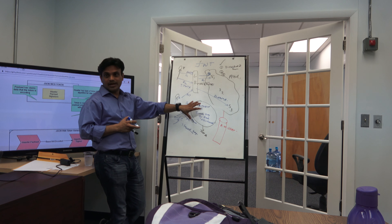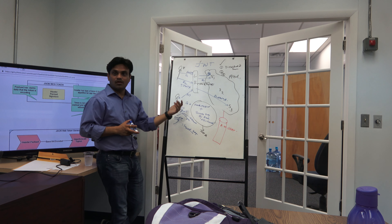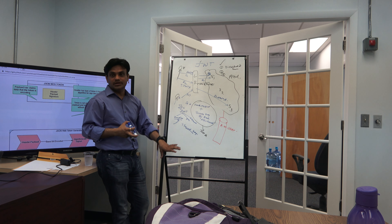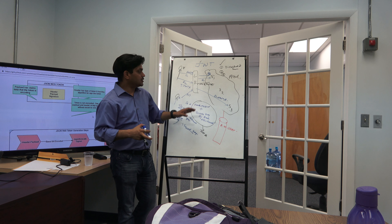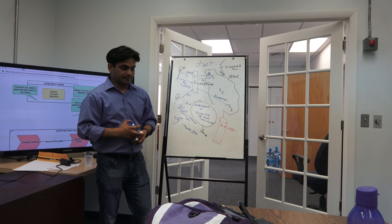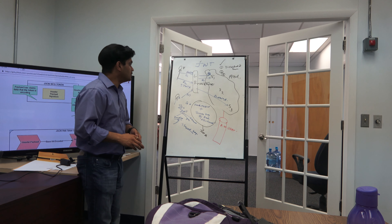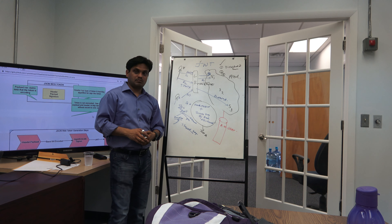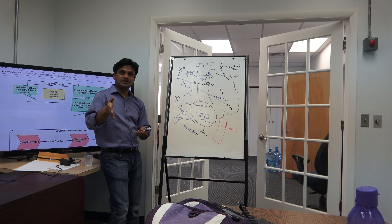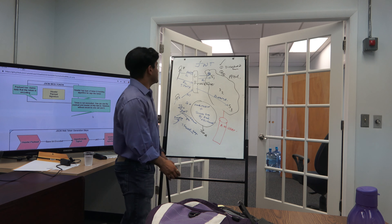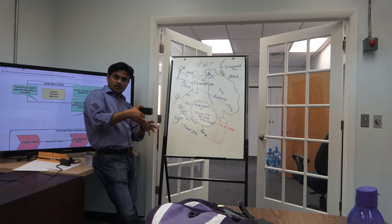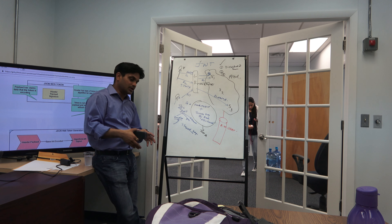JWT is not encrypted — you can always view the header and payload — but you cannot use or forge it without the secret key, which only the server has. Next, we will dig deeper into JWT: how it looks, how it is created, and what its generation process is.